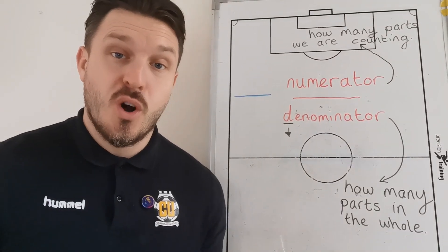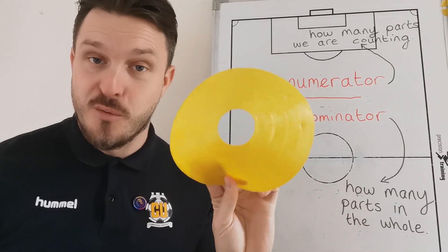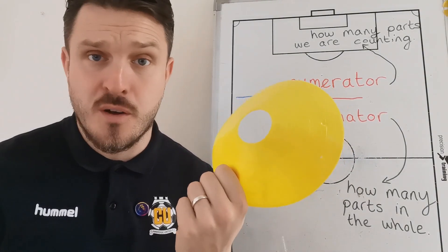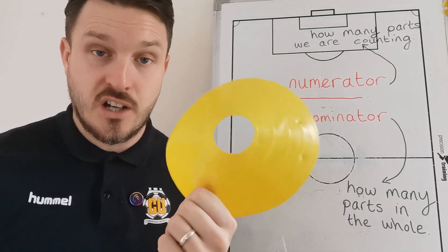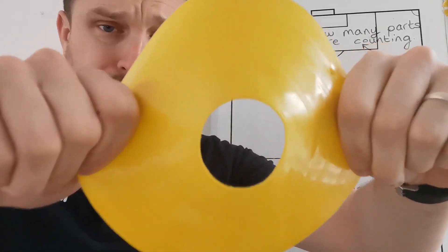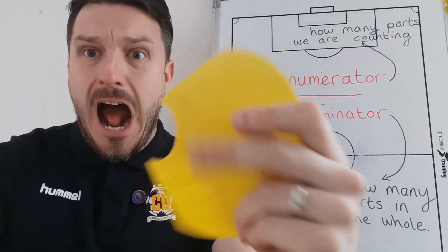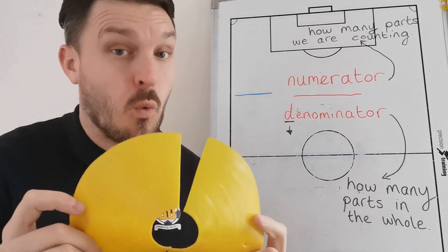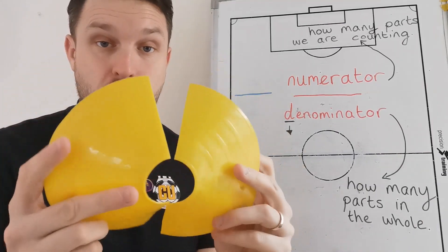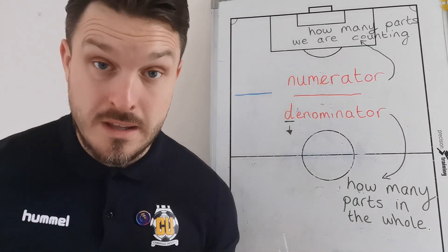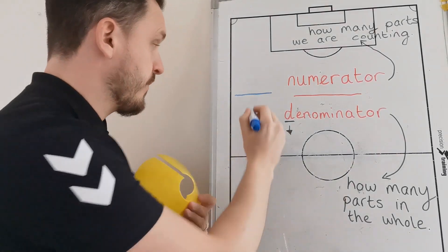Let's have a look at a quick example. I'm going to use this cone — anyone that plays football, trains, or does after school clubs will have seen many, many of these. Most coaches have like thousands of them. But what I'm going to do is make this into a fraction. I need to split this into two parts. So I've now got my whole, which is in two parts — there must be equal parts, otherwise it won't work. Now I've got my two parts, I can see that two parts make my whole here, so my denominator is going to be two.